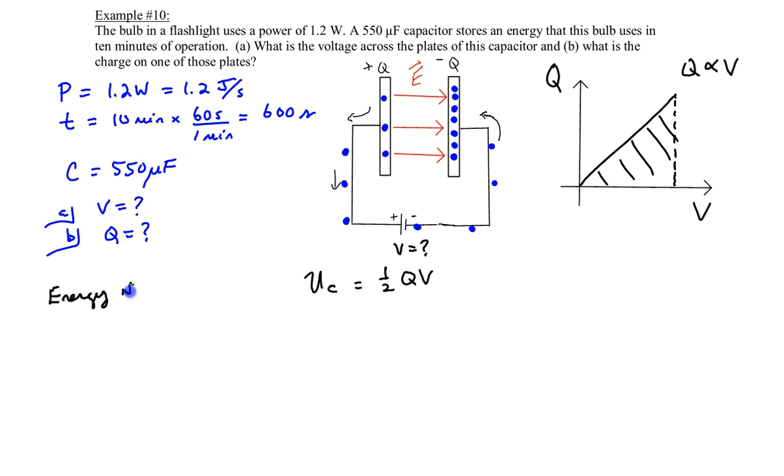Remember we have the power and the time, and power is equal to work over time. So the work in powering this flashlight is that power times time. The power is 1.2 joules per second or 1.2 watts multiplied by 600 seconds. That means you need 720 joules of energy to power this flashlight for 10 minutes of operation.